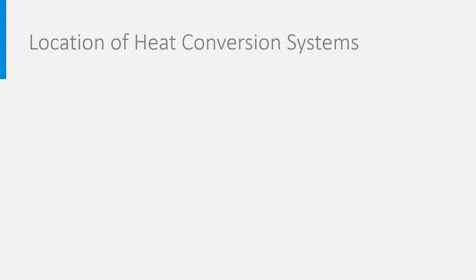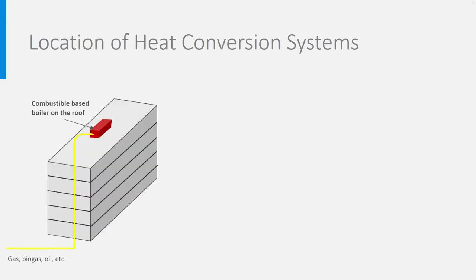Let's start with the heat conversion system, which may be located differently depending on the type of natural resource used. In general, systems using combustible resources like gas, oil, or biogas will be placed on the roof so that in case of explosion, damage to the building is limited.